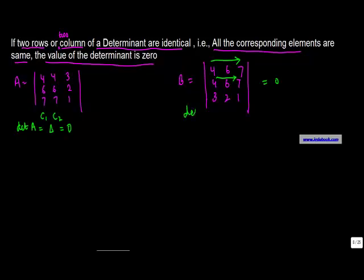So matrix B is also going to give a determinant of zero, because row 1 and row 2 are the same. Let us verify whether this is true by calculating.